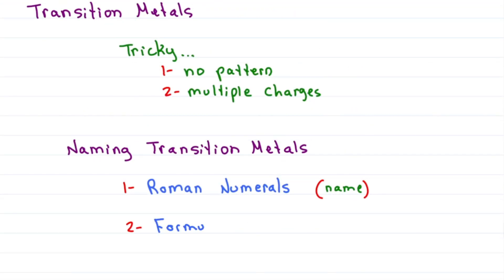If you're given the formula for a transition metal, just balance the charge. Actually, just reverse the crisscross.